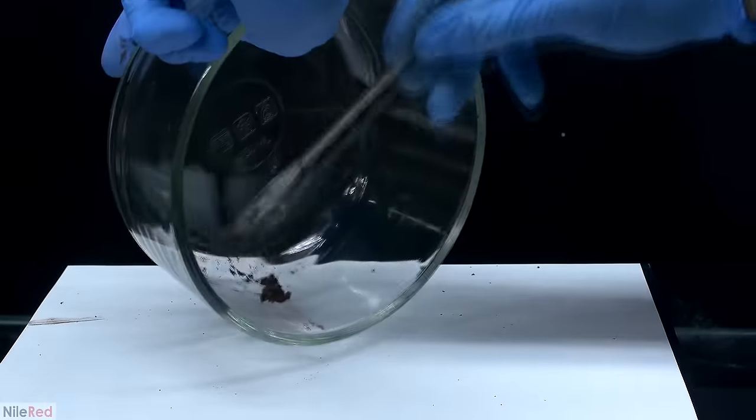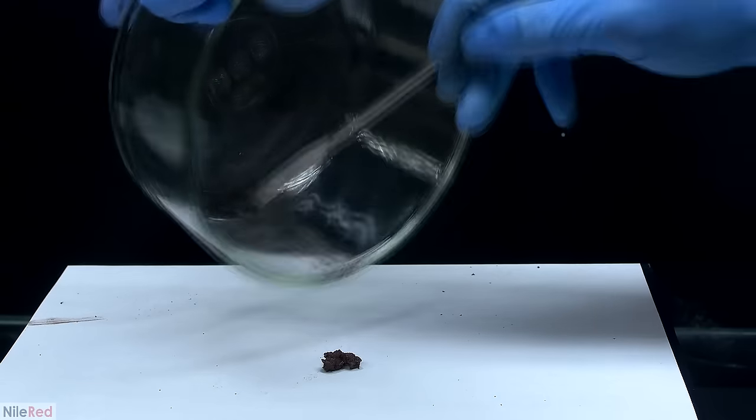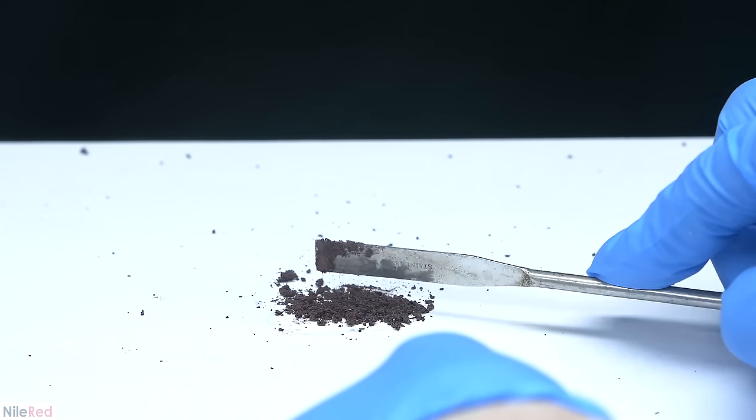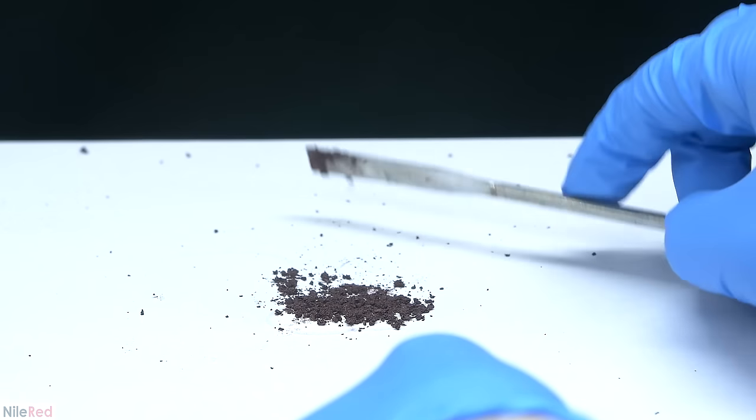At the bottom of the bowl, we're left with red phosphorus that's wet with acetone and to dry things off, I scraped it onto a piece of paper. Initially, the red phosphorus is pretty clumped up, but it should become much more powdery as the acetone evaporates.